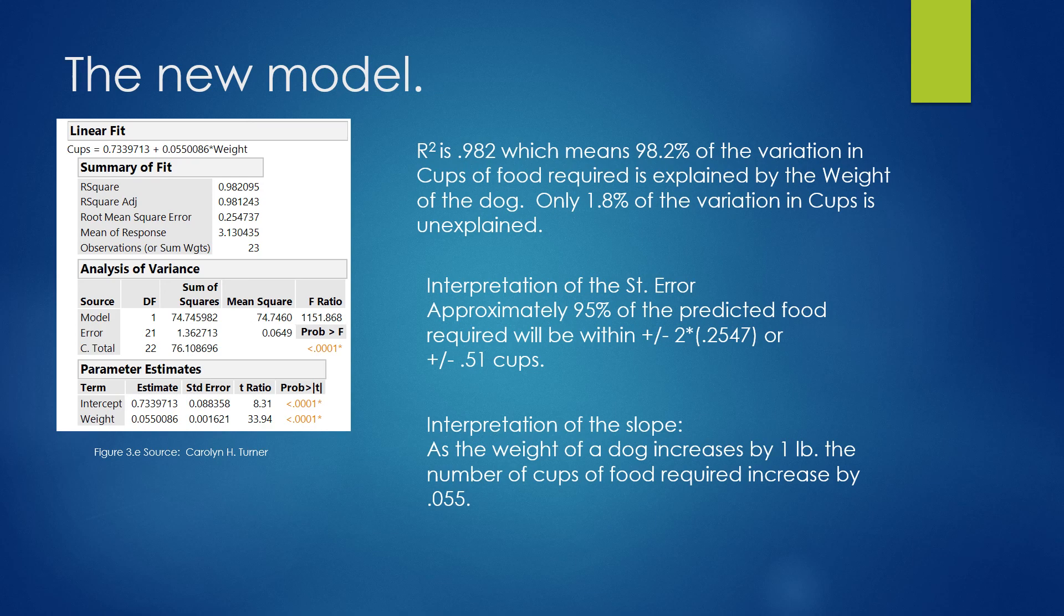Then, our interpretation of the slope. The slope in the equation is the value in front of the weight variable. So we're interpreting .055. As the weight of the dog increases by one pound, the number of cups of food required increase by .055.